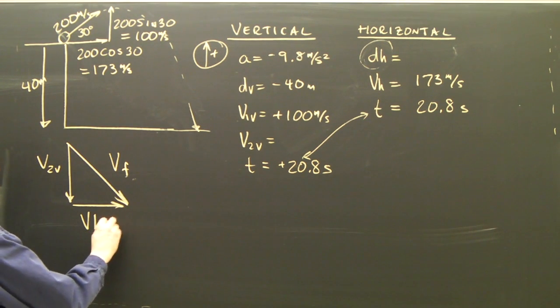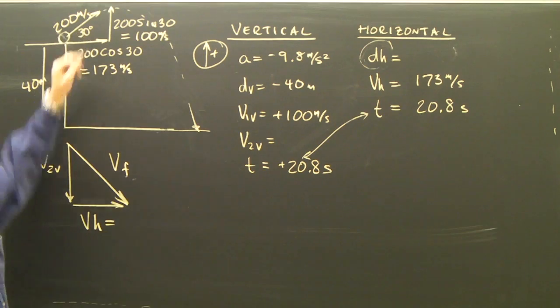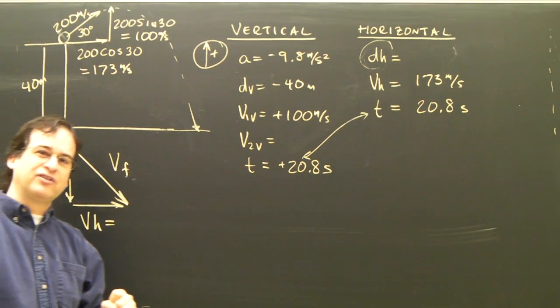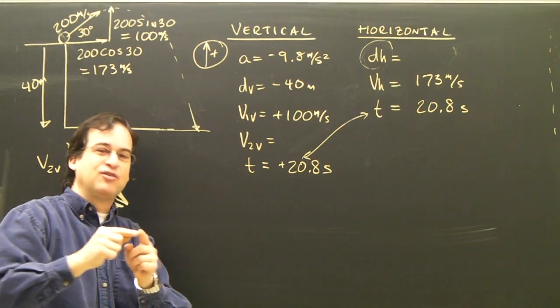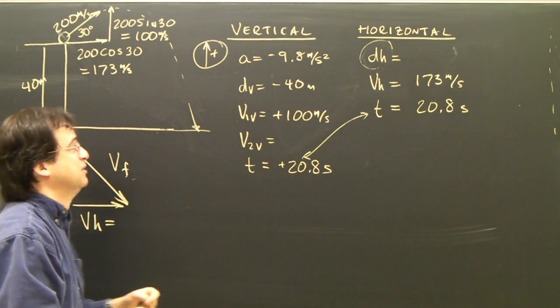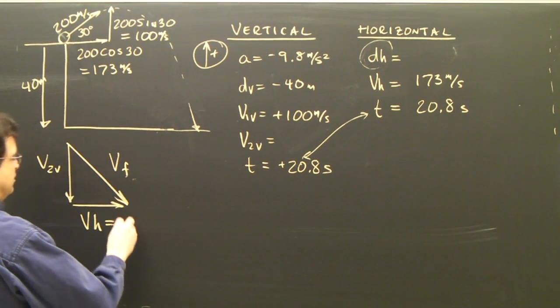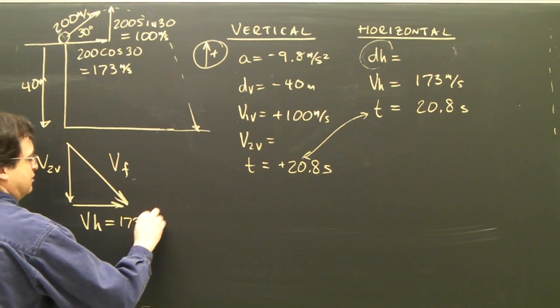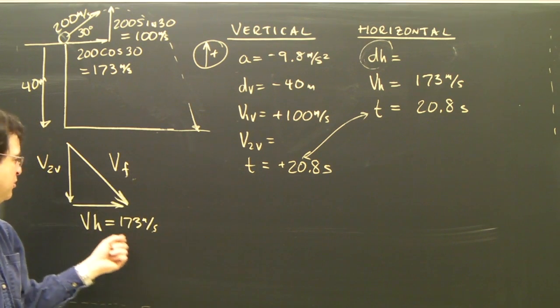Well, the horizontal is easy, because the horizontal velocity never changed. The entire time the projectile is in flight, the horizontal component stays the same. So the horizontal component here was 173, so when it impacts the ground, the horizontal is still the same.